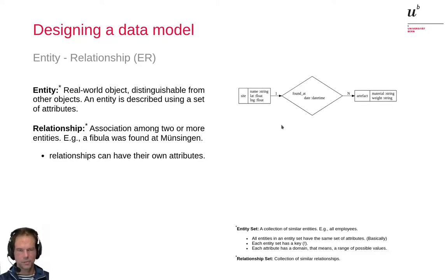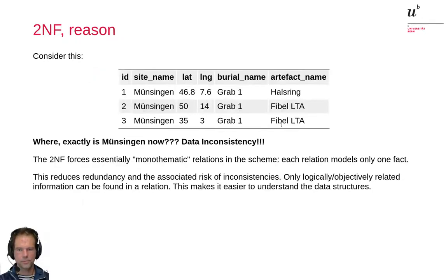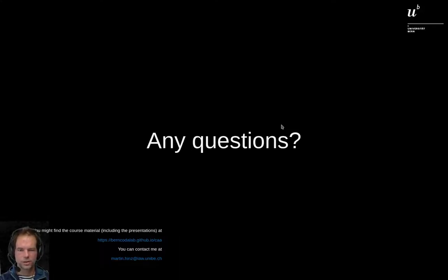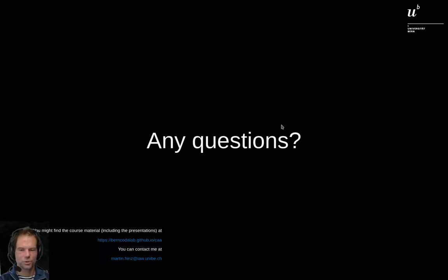In the actual session, your task will be to define a structure that fits your site. Probably most structures will be very similar, so we will compare your solutions. What information do we want to record? What entities and relationships do we have? What attributes will these entities have? And how can we transform that into tables and normalize them? This usually comes naturally — if you have an idea what entities you have, you will easily transform this into objects. Best start by drawing your relationship and thinking about how things are connected to other objects, then formalize that into a table structure. If there are any questions, contact me via email or via Slack or at my office hours. Looking forward to our next session.